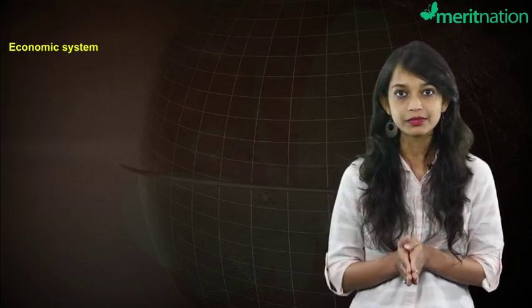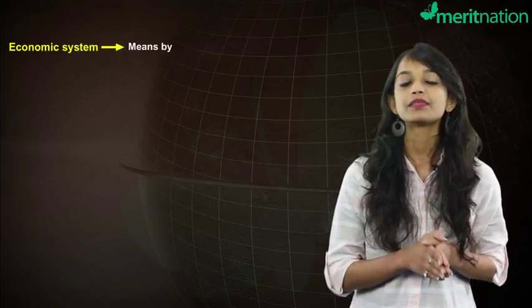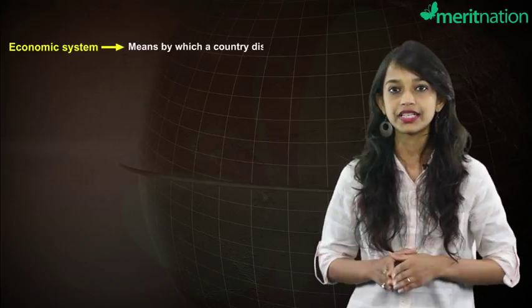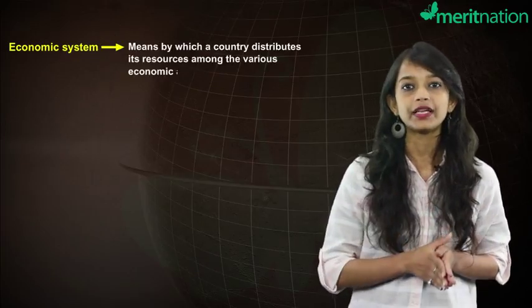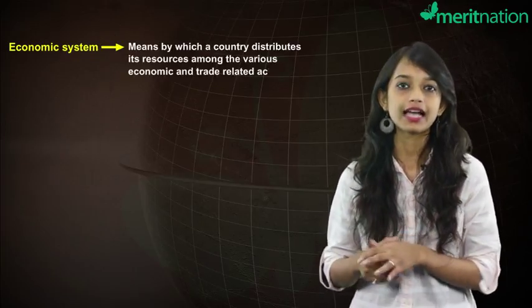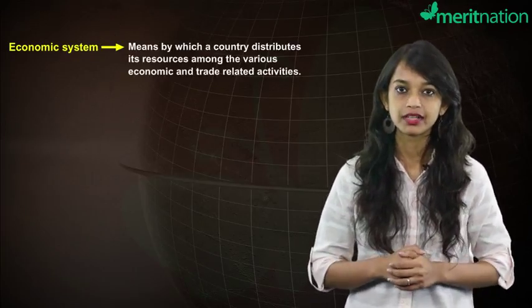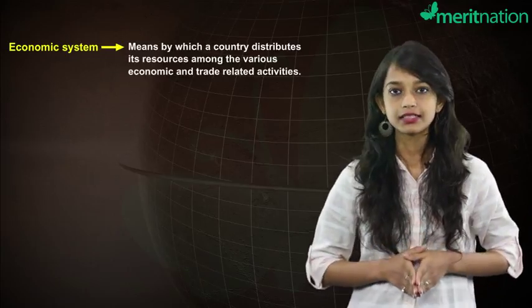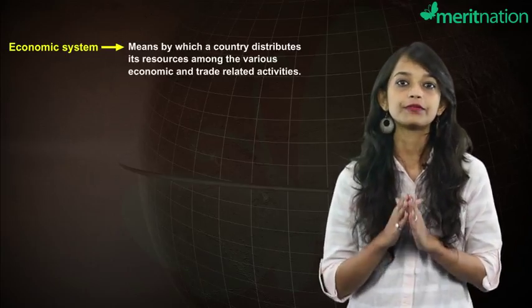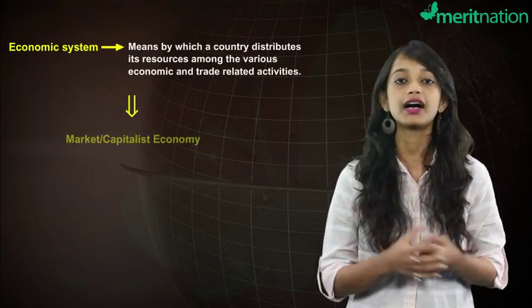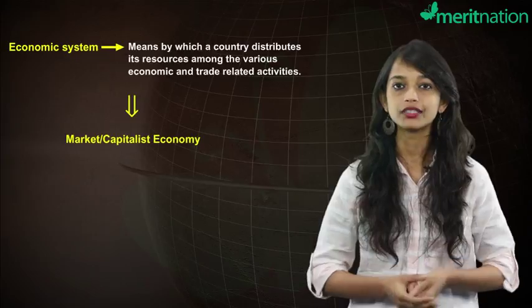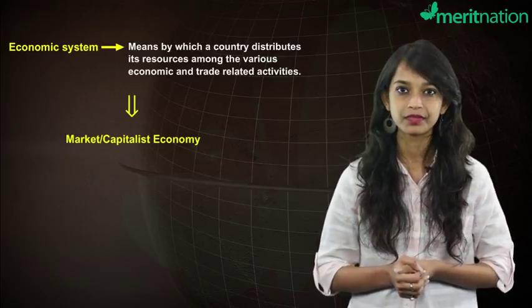In the previous video, we discussed that an economic system is the means by which a country allocates its scarce resources in the various economic and trade-related activities. Now, in this video, let us consider the first type of economic system, that is the market economy or the capitalist economy system.